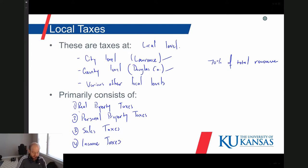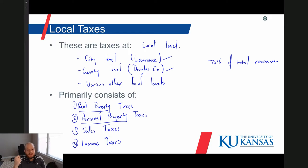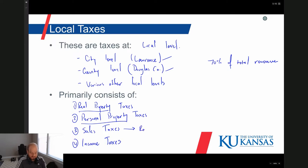We're going to talk about what real property and personal property are. We already talked about sales taxes — these are transaction-based taxes triggered when a sale takes place. They are flat rate taxes, so whether you spend $2,000 at Best Buy or $100 at Hy-Vee, you pay the same sales tax rate. It's not a graduated rate that increases with the base.